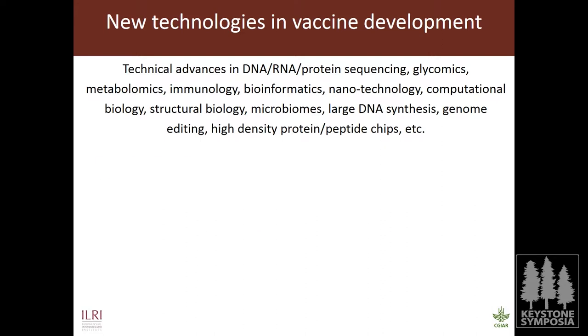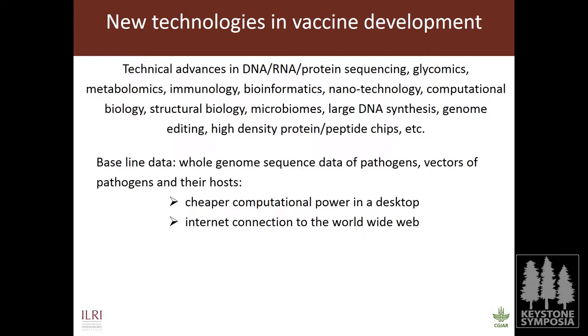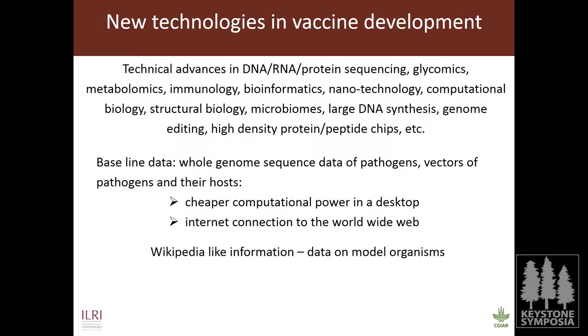The baseline data for all of this is whole genome sequence information — from pathogens, vectors of disease such as mosquitoes, ticks, and snails, and their hosts, whether human, mouse, or other animals. These have depended on cheaper computational power; you can now do on your laptop what used to require a whole server. The worldwide web allows us to ask questions of what others have found, giving us Wikipedia-like information and rich data on model organisms like mouse, yeast, bacteria, Drosophila, and C. elegans.